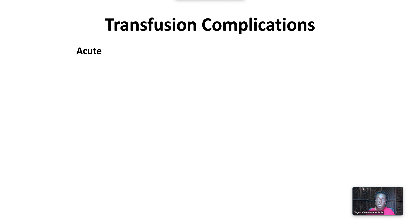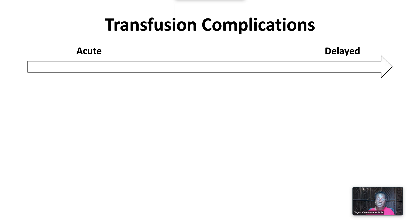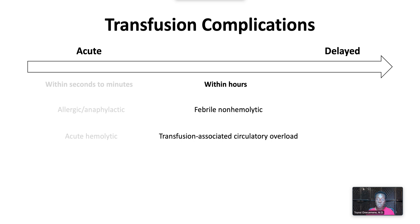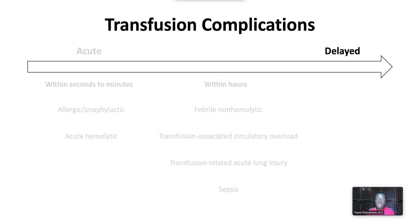Transfusion complications can be acute, occurring within a few hours of transfusion, or delayed, occurring days to weeks after transfusion. Acute complications occurring within seconds to minutes include allergic or anaphylactic reactions and acute hemolytic transfusion reactions. Acute complications within hours include febrile non-hemolytic transfusion reactions, transfusion-associated circulatory overload, transfusion-related acute lung injury, and sepsis. Delayed complications occurring within days to weeks include delayed hemolytic transfusion reactions and transfusion-associated graft-versus-host disease.